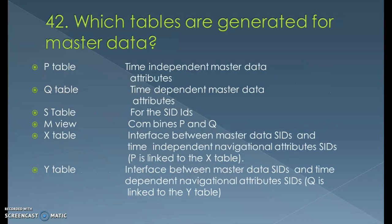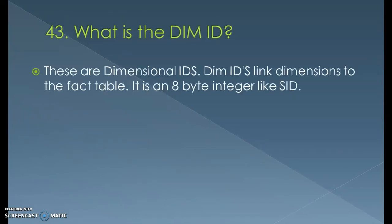Which tables are generated for master data? P tables are generated for time-independent master data attributes. Q tables are generated for time-dependent master data attributes. S tables are generated for the surrogate ID. M view combines P and Q — that is, both time-dependent and time-independent master data attributes. The X table is the interface between master data SIDs and time-independent navigation attribute SIDs (P is linked to X). The Y table is the interface between master data SIDs and time-dependent navigation attribute SIDs (Q is linked to Y).